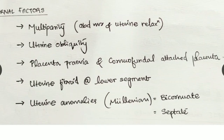With cornuofundal attached placenta, the placenta is attached at the upper fundal position, giving the child less space and altering alignment. A uterine fibroid in the lower segment similarly reduces space and causes abnormal lie.